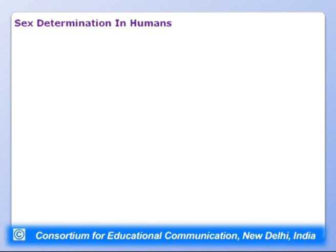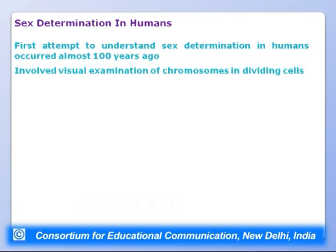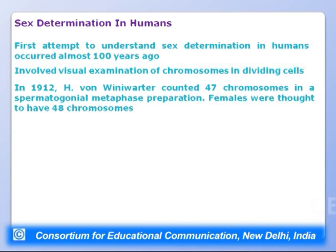Understanding sex determination in humans began about 100 years ago through visual examination of chromosomes in dividing cells. In 1912, Winnie Water counted 47 chromosomes in a spermatogonial metaphase preparation, believing females would have one extra chromosome — 48 total.